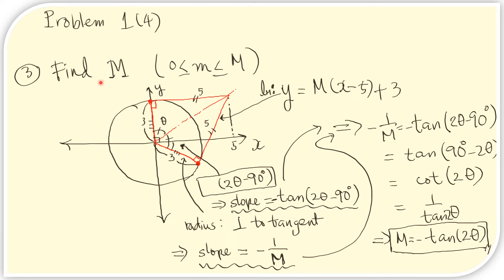Next, we need to find the value of capital M. There are two ways to do this. First, we could set up simultaneous equations to solve for the point of intersection of the radius and the tangent line — however, this requires tedious computation, so we will avoid that solution. Instead, we will use the geometry of the problem.